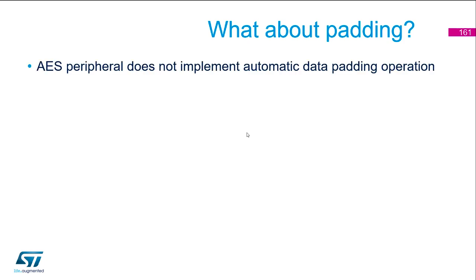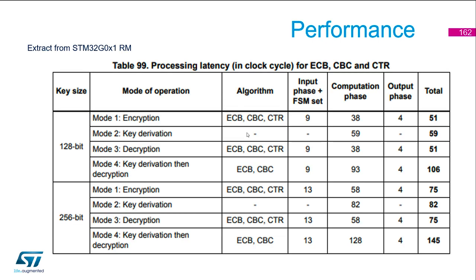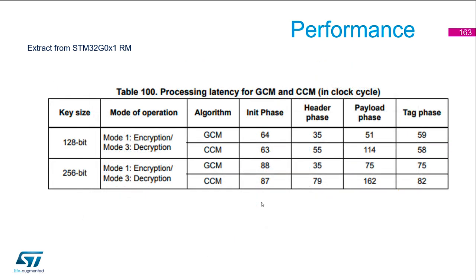What about padding? The AES peripheral does not implement automatic data padding operation, so you have to take this into account and handle it yourself. Regarding performance, this is an extract from the reference manual of the G0. There are four modes: mode 1 is encryption, mode 2 is key derivation, mode 3 is decryption, and mode 4 does key derivation then decryption. It's more efficient to use mode 4 than doing mode 2 first then mode 3 — it's a useful optimization.